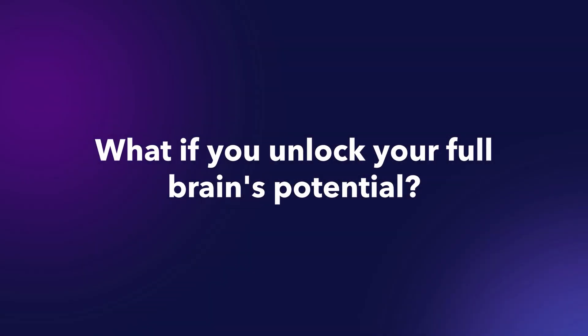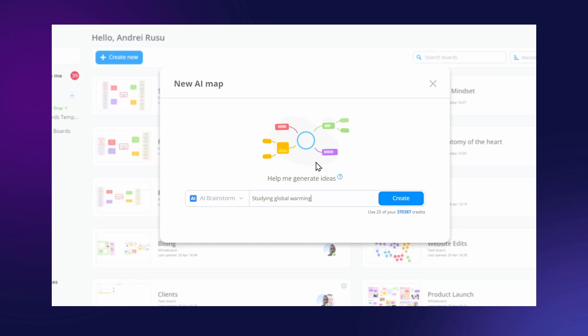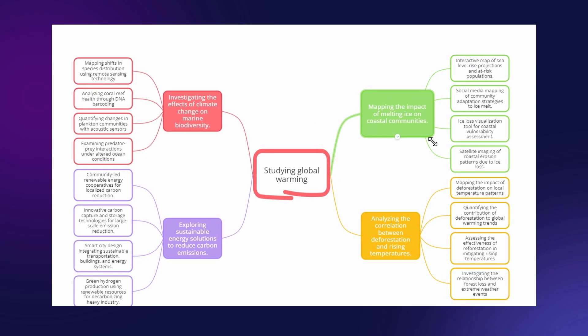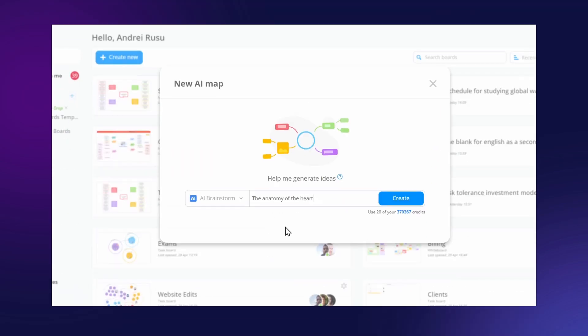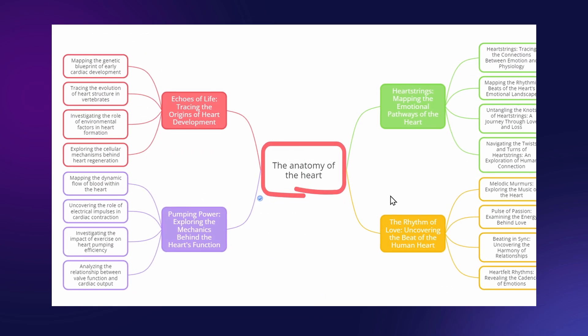So the question is, what if you unlock your full brain's potential? We created AOA, the app that uses both AI and Mind Maps to boost your brain power. Mind Maps help your brain make connections that will lead to a way more efficient way of learning.